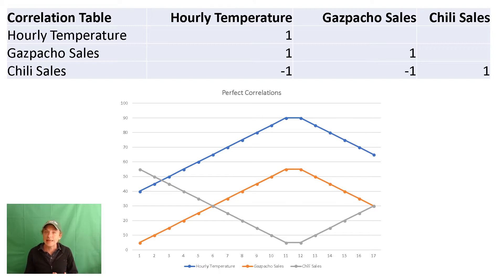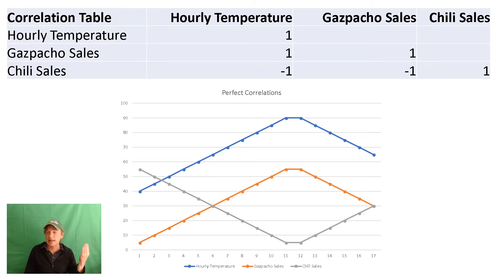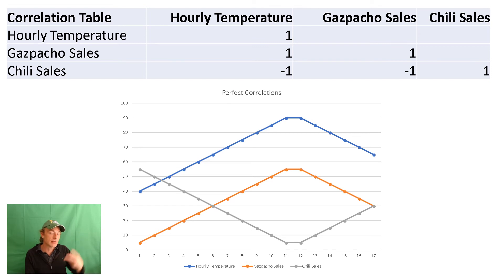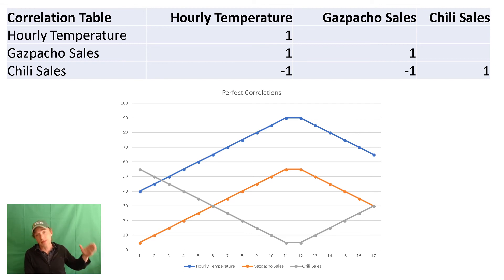Then we see with the chili, the hot soup, that it has a perfect inverse correlation, meaning that as the temperature rises, the sales of the hot soup decrease. I've made it up so that we get to see a perfect correlation both inverse and positive. If we look over, we can see that the blue and the orange lines are moving parallel together — that is a perfect correlation — whereas the gray line, which is the chili, is inverse to both of those.